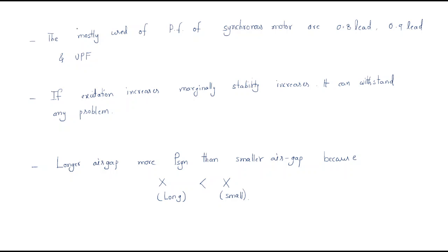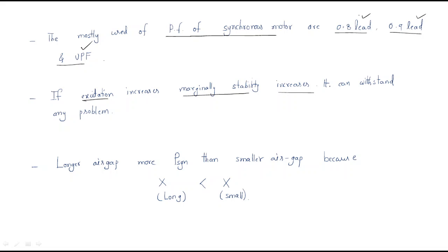The mostly used power factors for synchronous motors are 0.8 lead, 0.9 lead, and unity power factor. Lead power factor means more excitation is available; unity power factor means the required excitation is just met. If excitation increases marginally, stability also increases and the system can withstand any problem.